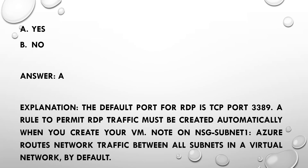Explanation: The default port for RDP is TCP port 3389. A rule to permit RDP traffic must be created automatically when you create your VM. Note: on NSG-Subnet1, Azure routes network traffic between all subnets in a virtual network by default.